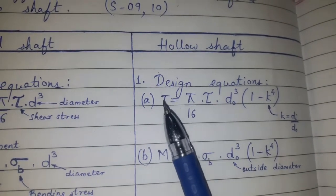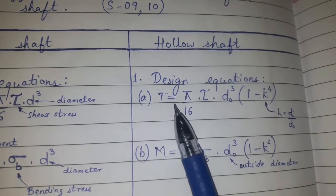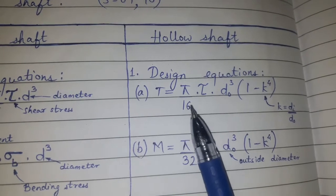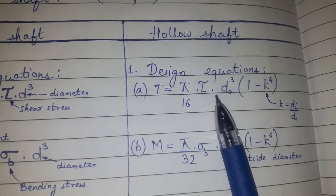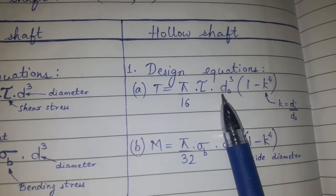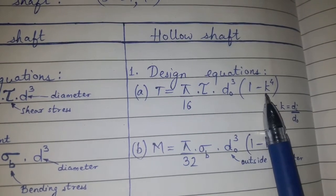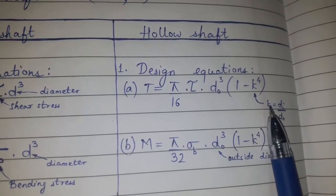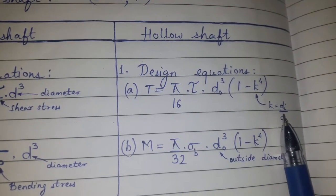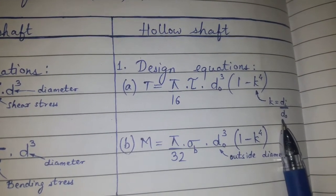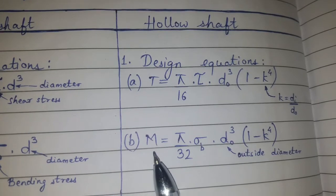The design equation is the torque equal to pi by 16 into shear stress into the outer diameter cube into 1 minus k raised to 4, where k is equal to inner diameter upon outer diameter.